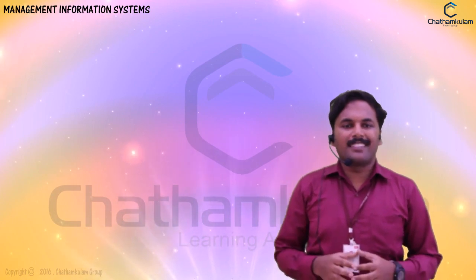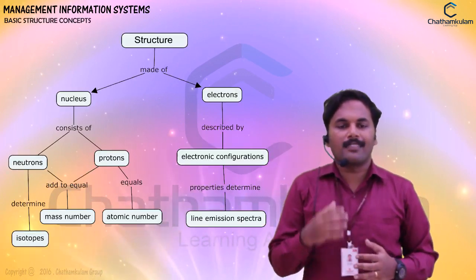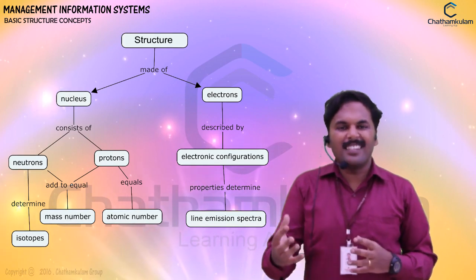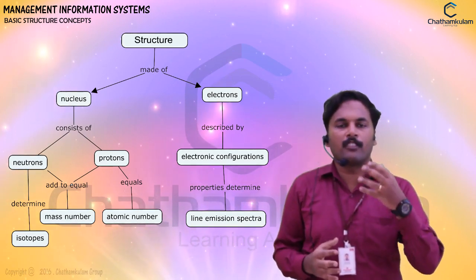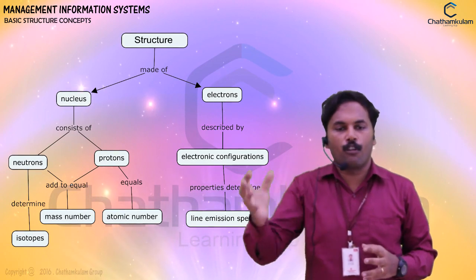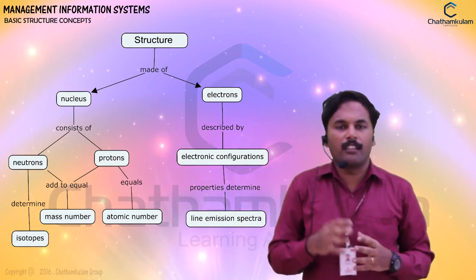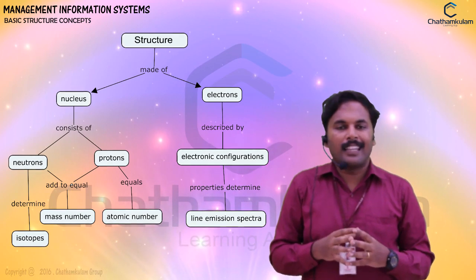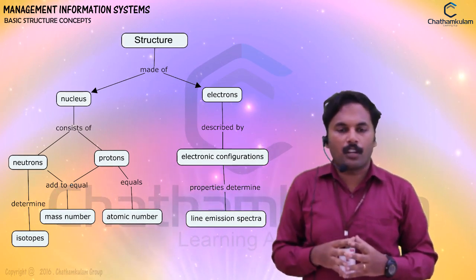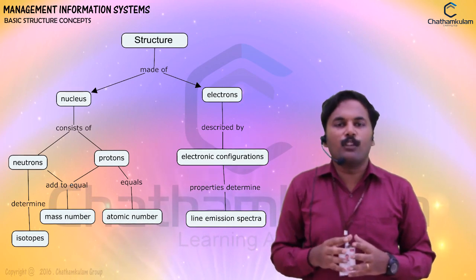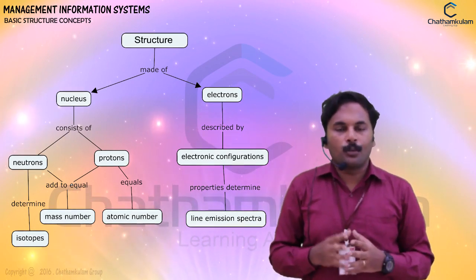Today we are going to discuss the structure of MIS. The structure of MIS is implemented in companies in order for the smooth flow of information — that is, for the planning as well as controlling of information with respect to the organization. The structure is mainly used for proper decision making.